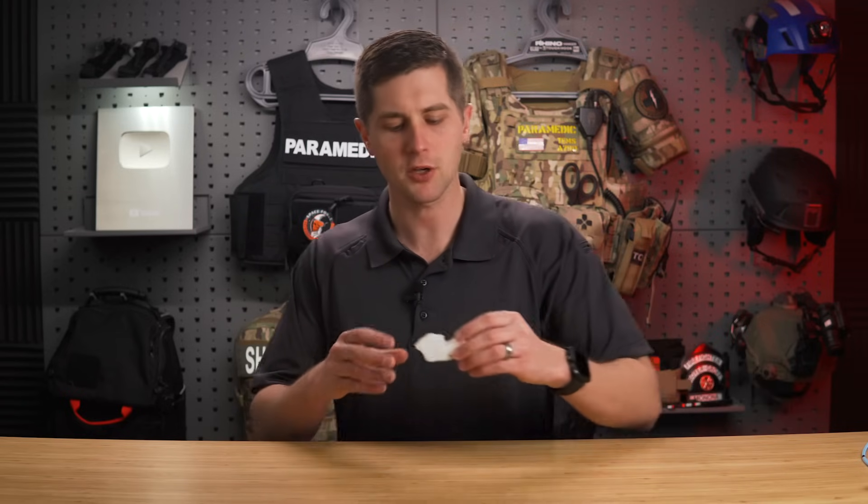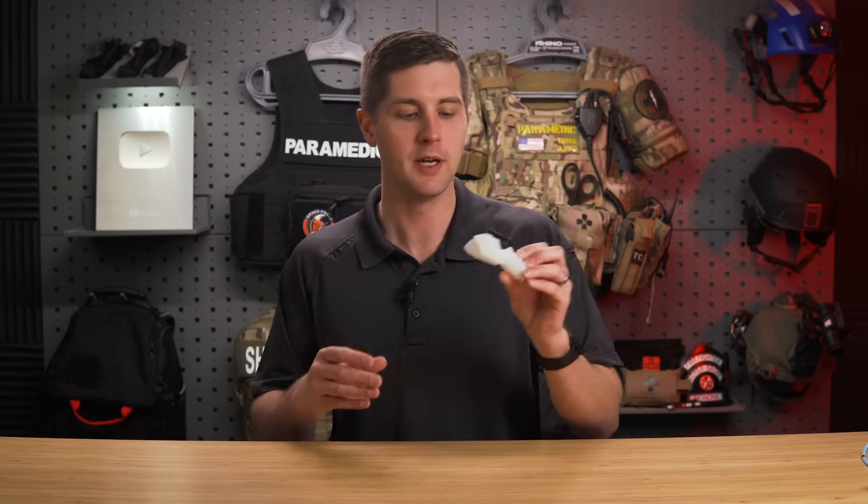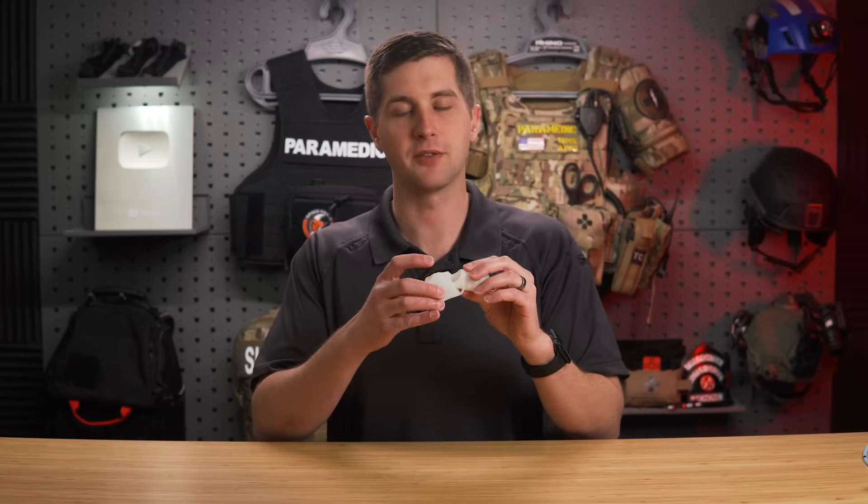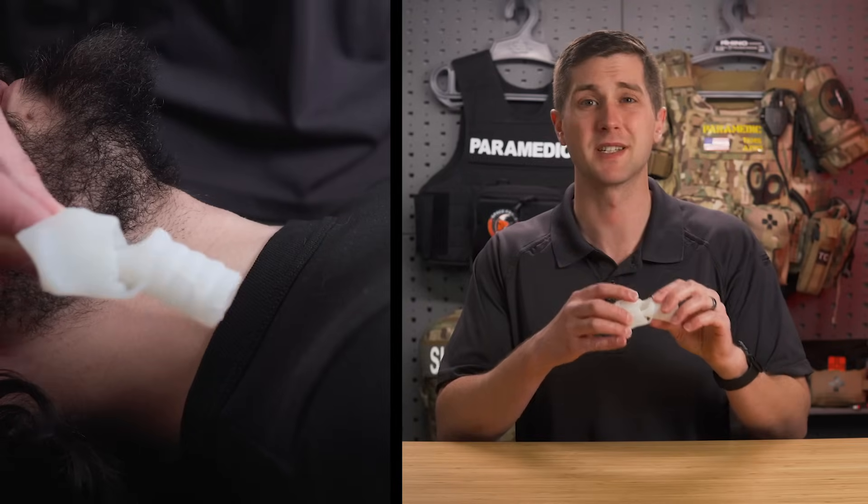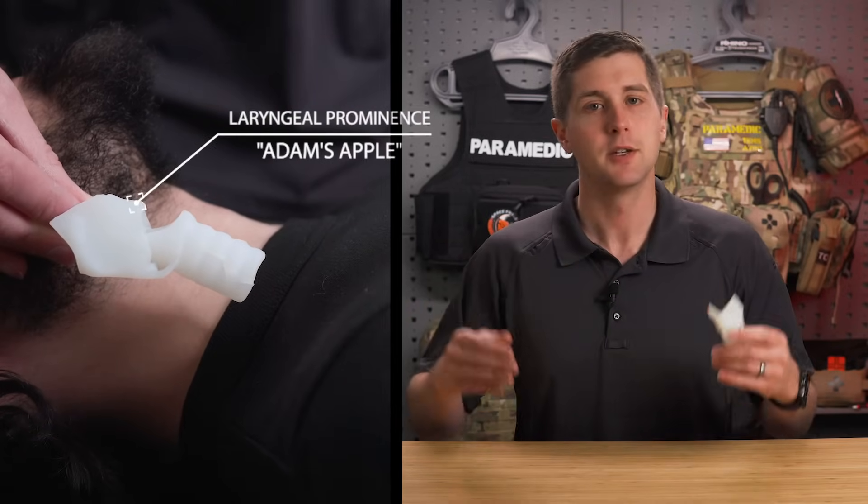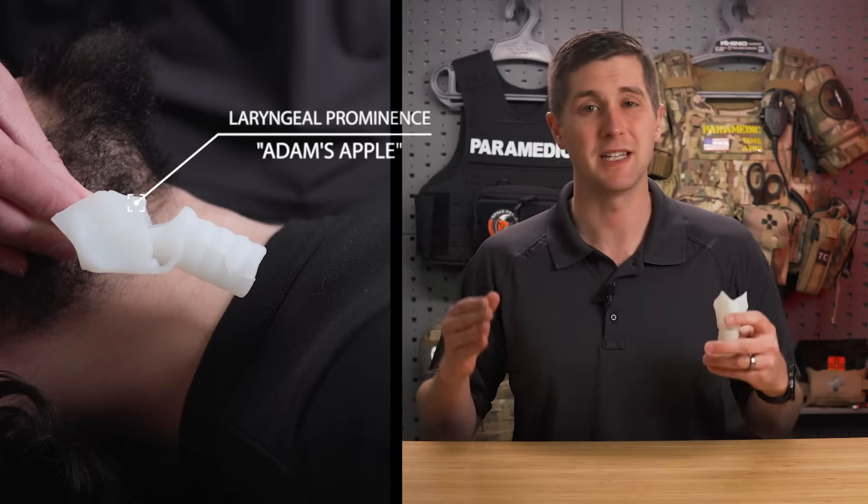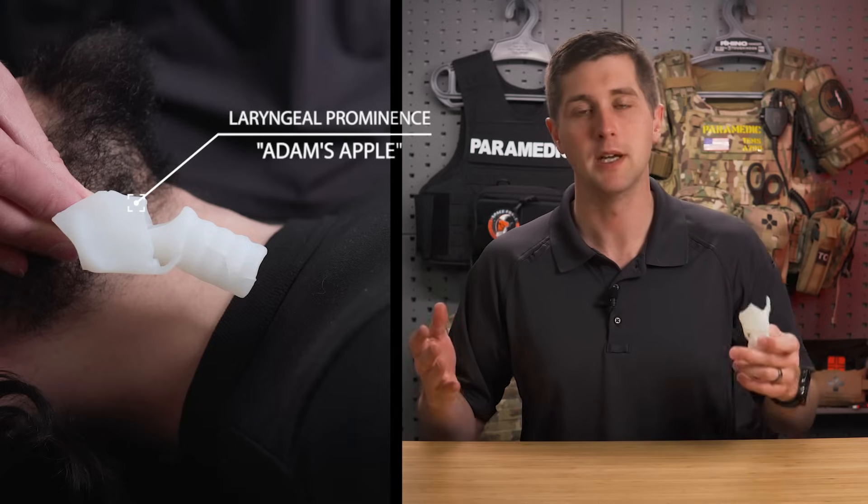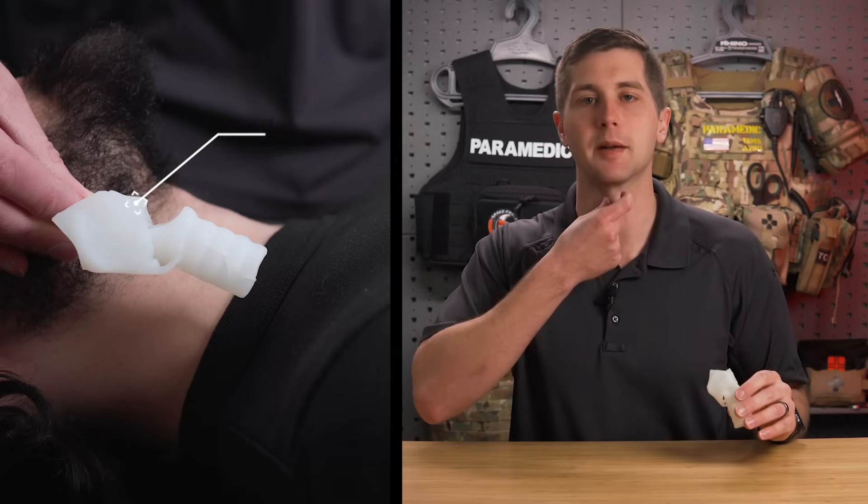So now that we discussed the indications and contraindications of the surgical cricothyroidomy, we're going to go through some of the anatomy of the neck so you can appropriately identify the landmarks required for this procedure. Right here, I've got a small 3D printed model that has the major landmarks you need to know. The first thing we're going to find is the laryngeal prominence, also known as the Adam's apple.